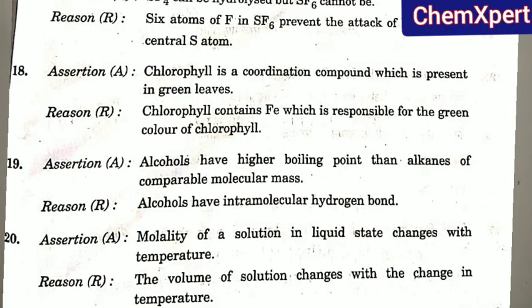Question 19: Assertion — alcohols have a higher boiling point than alkanes of comparable molecular mass (correct). Reason — alcohols have intramolecular hydrogen bonding. This reason is wrong because alcohols actually exhibit intermolecular hydrogen bonding, not intramolecular. So the assertion is correct but the reason is incorrect — option C is the answer.